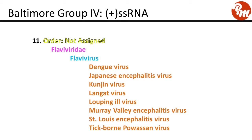Next, order not assigned, family Flaviviridae, genus flavivirus. This includes dengue, Japanese encephalitis virus, kunjin virus, langat virus, louping ill virus, Murray Valley encephalitis virus, St. Louis encephalitis virus, and tick-borne Powassan virus.